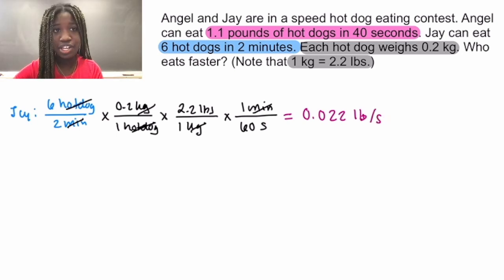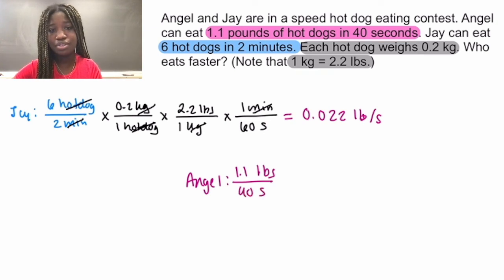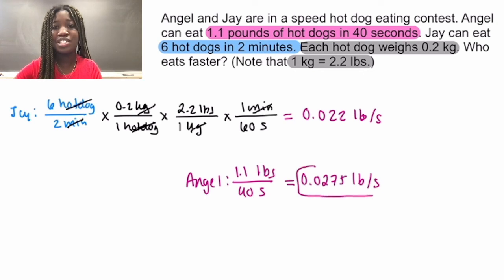Now let's look at Angel again. We know that Angel can eat 1.1 pounds of hot dogs in 40 seconds. So if you simplify this down, this is 0.0275 pounds of hot dogs per second. Which means again, Angel is beating Jay.